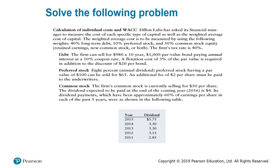For the cost of common stock, the firm's common stock is currently selling for $50 per share. The dividend expected to be paid at the end of the coming year is $4. Dividend payments have been approximately 60% of earnings per share in each of the past five years. The current selling price and next year's dividend are given, but the growth rate is missing — I have to calculate the growth rate using the equation: growth rate equals (future value over present value) to the power of (1 over n) minus 1.